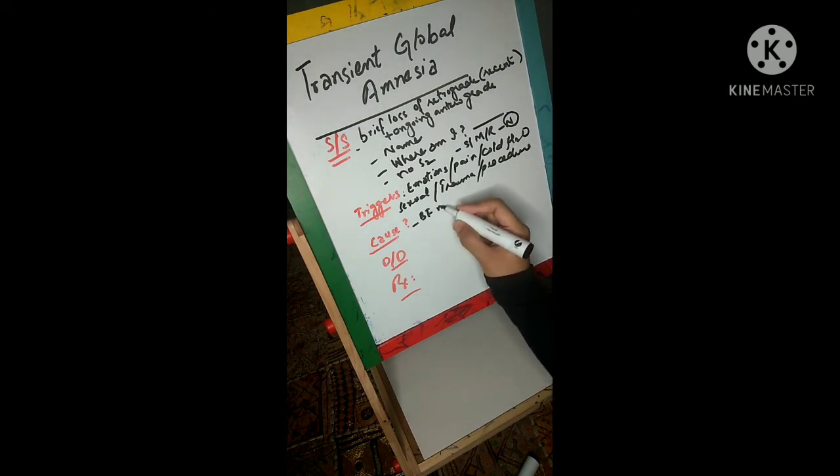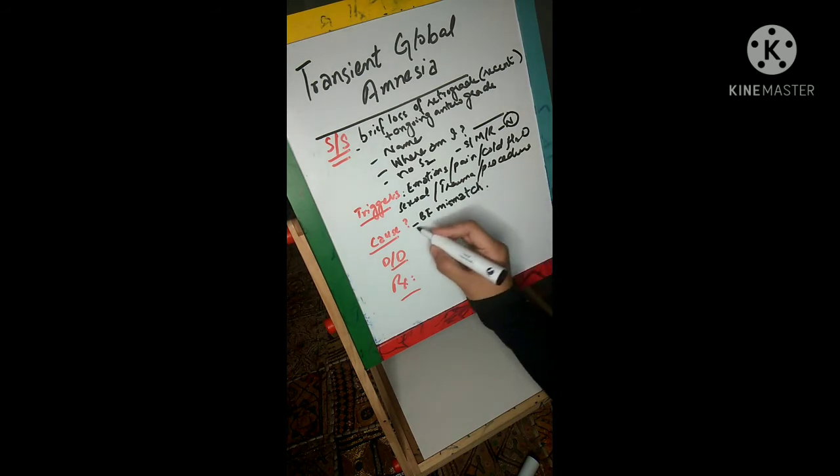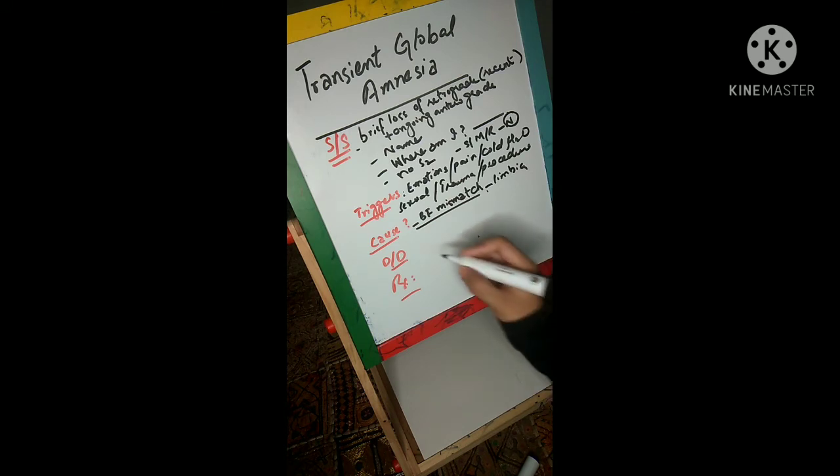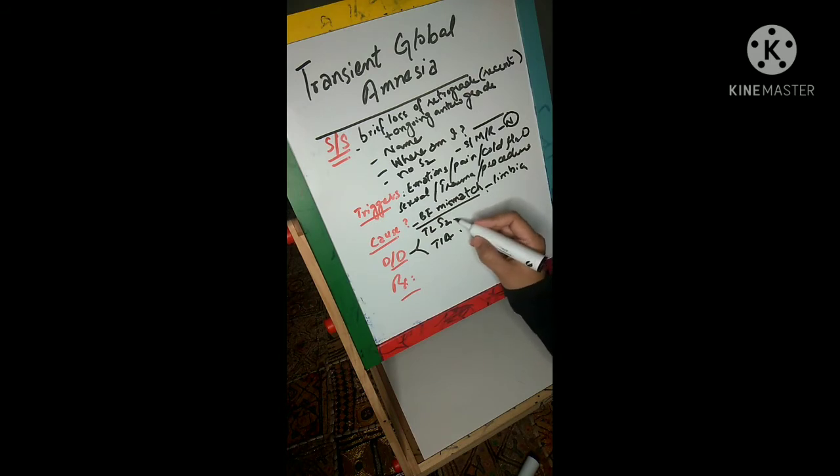So what is the cause? There is a hypothesis that there's a mismatch between the blood supply requirement of the limbic region and the actual blood flow to that region. This mismatch between demand and supply results in transient global amnesia. For differential diagnoses, I'll tell you two important ones. First is temporal lobe seizure.